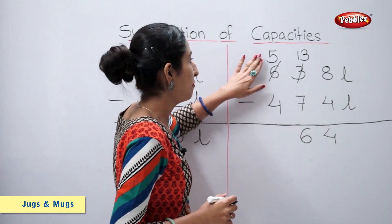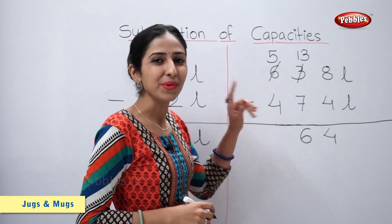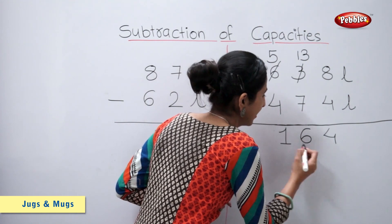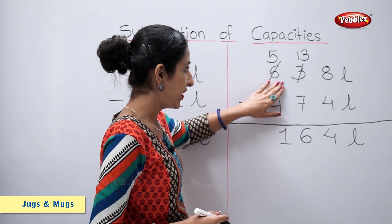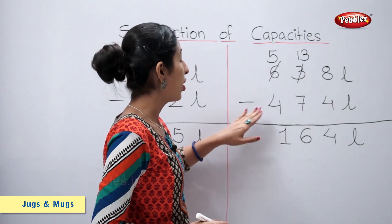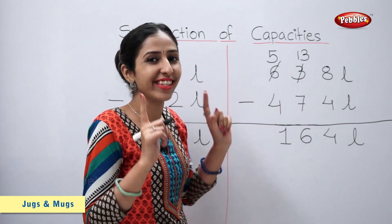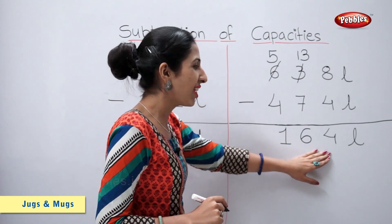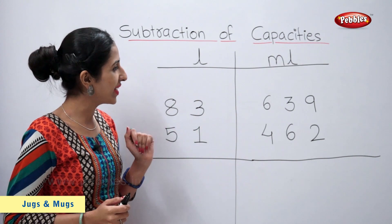And 5 minus 4 is equal to 1. So, 638 litres minus 474 litres is equal to 164 litres. Let's look at this example.